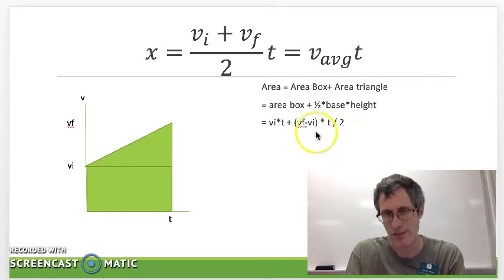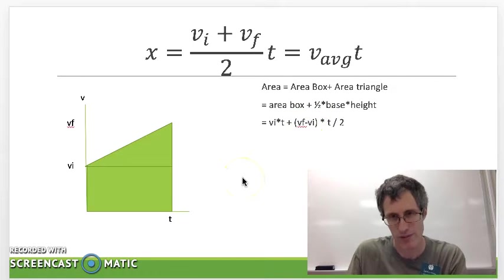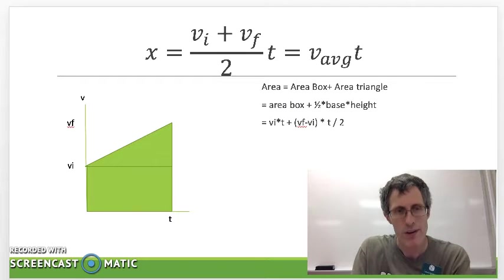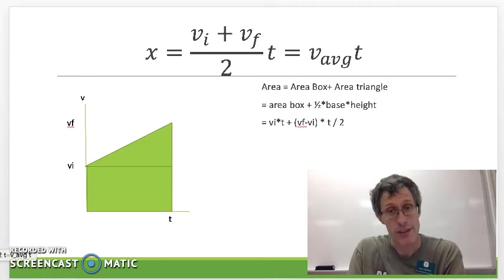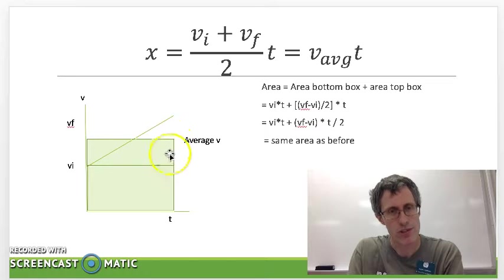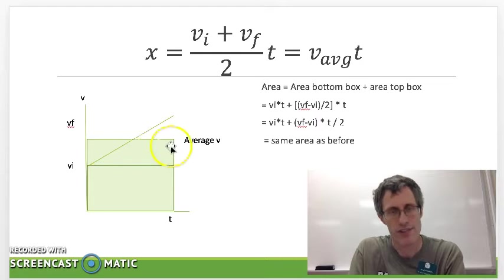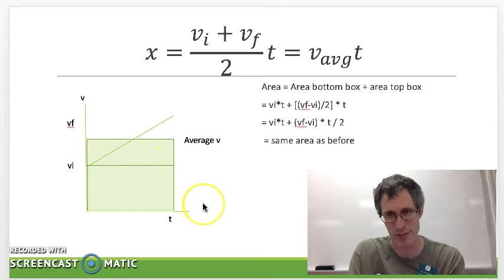2 is the base, the difference in velocities is the height. Okay, so far so good. Now there's another way to do this if you don't like triangles you can actually substitute the triangle with this box of half the height. So it turns out if you take this little box which is the height of the average velocity, we're getting to our equation.